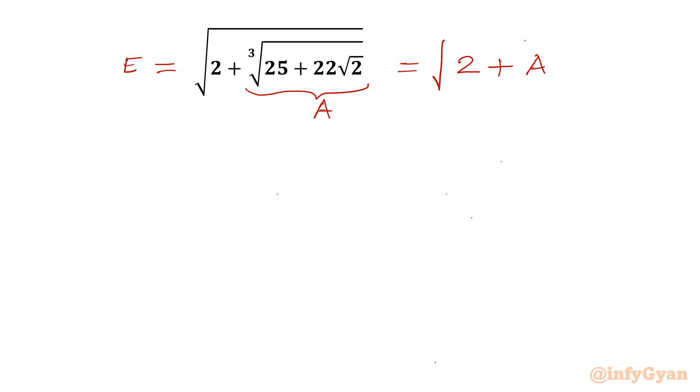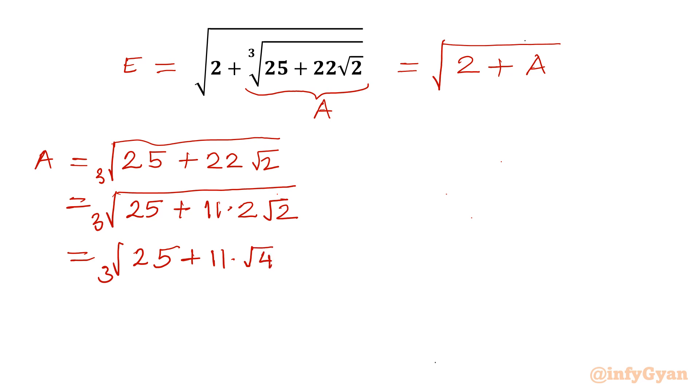Now we will calculate A and then we will put here. So let me write here A equal to cube root of 25 plus 22 root 2. Now I can write 22 as 11 times 2 times root 2. Then we can write cube root 25 plus 11. And this 2 I will write square root 4, square root 2.